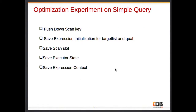Now I'll talk about all the experiments we have done with the simple query. The first thing is pushing down the scan keys — if scan keys are very simple, and in a simple query they always are. Second, saving the initialization of target list and qualification list. Third, saving the scan slot, the executor state, and expression context. Almost everything coming into the executor state we are saving and reusing for subsequent executions. I'll go through each one and also the performance results.